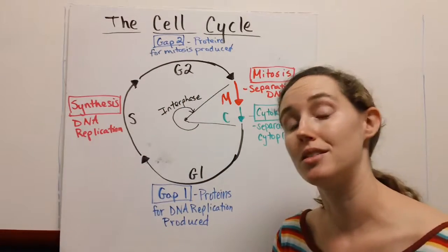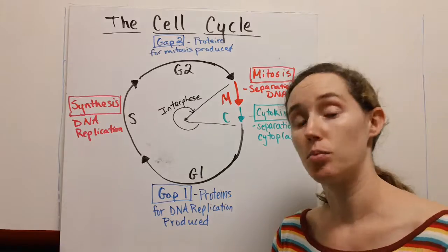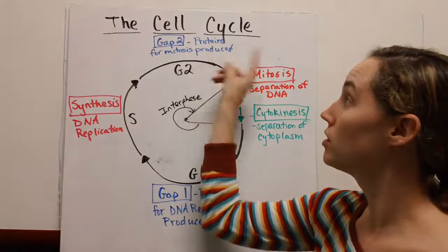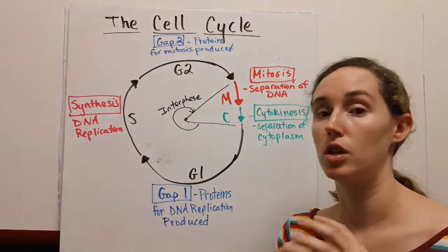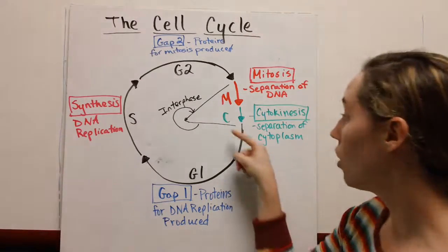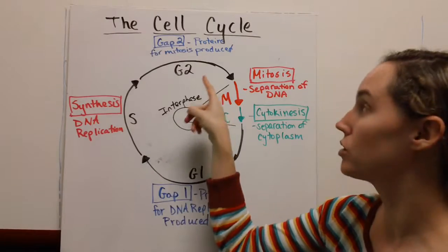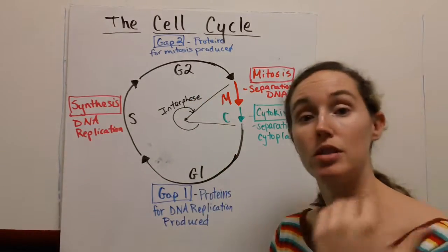Once our DNA is replicated, then you're going to move into G2, part of interphase. G2 means gap two, and this is the point at which proteins that are important for mitosis are produced.